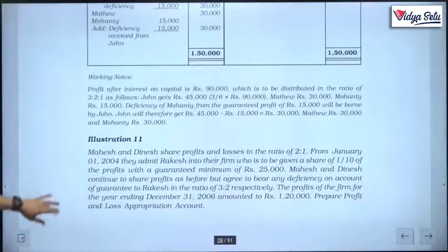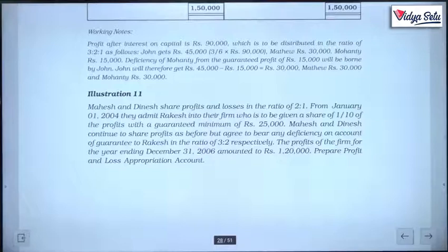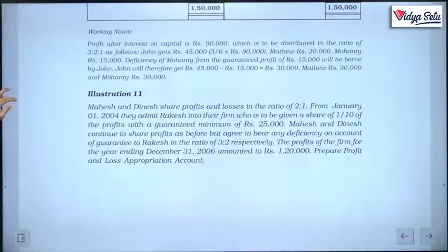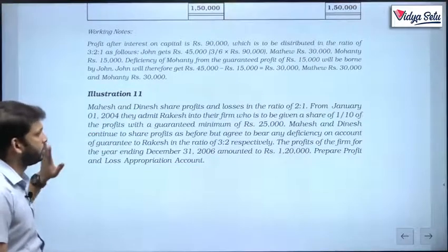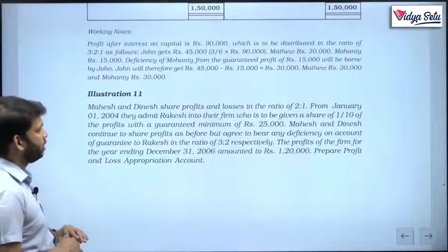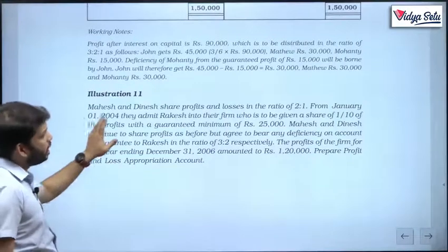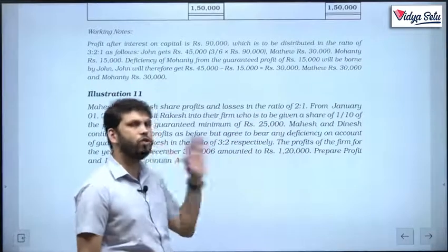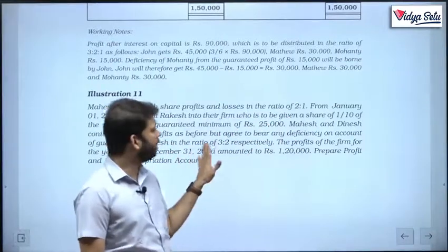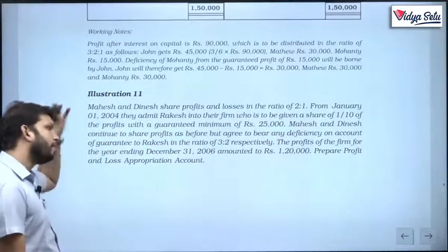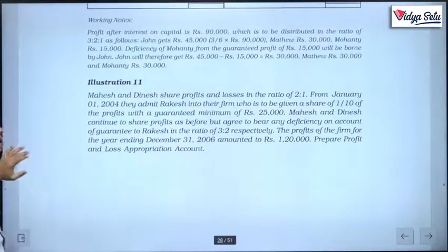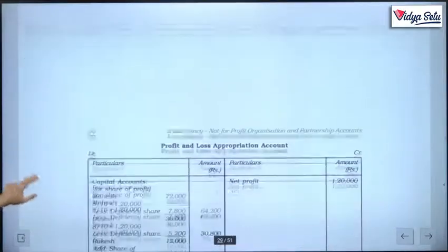Next illustration: Mahesh and Dinesh share profits and losses in ratio 2:1. From January 1, 2004, they admit Rakesh into their firm, who is to be given a share of one-tenth of the profit with a guaranteed minimum profit of 25,000. Mahesh and Dinesh continue to share profit as before, but they agree to bear any deficiency — not in their ratio of 2:1 but specifically in the ratio 3:2. The firm's profits for the year amounted to 1,20,000. Prepare the P&L appropriation account.